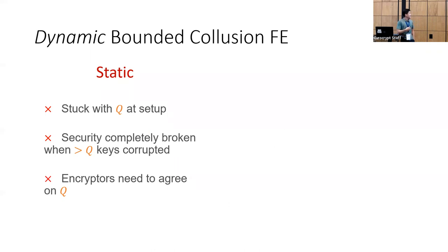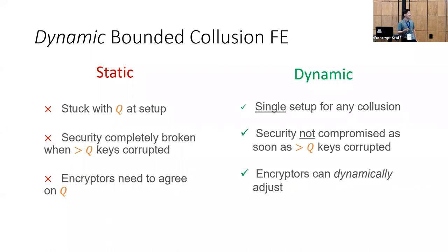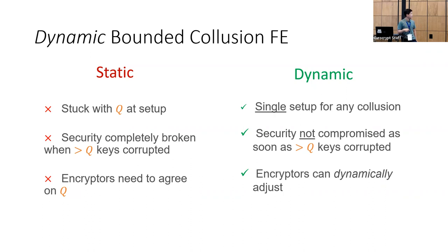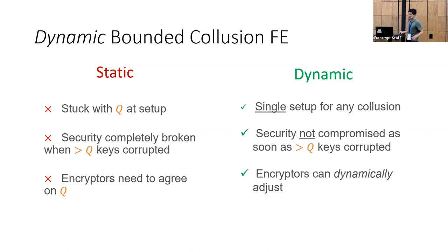This is a stronger notion and it solves the practicality issues with static bounded collusion functional encryption: at setup time, you don't have to worry about the collusion bound at all. Moreover, if you have different encryptors, they can each choose different collusion bounds to encrypt their messages.